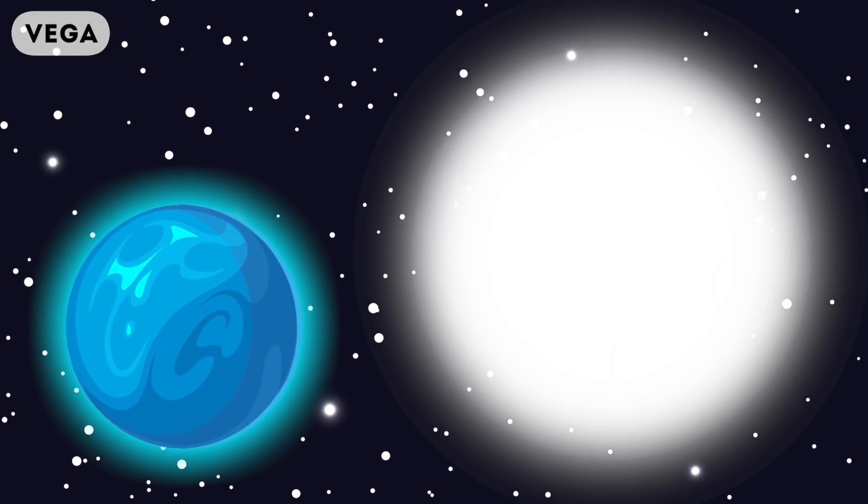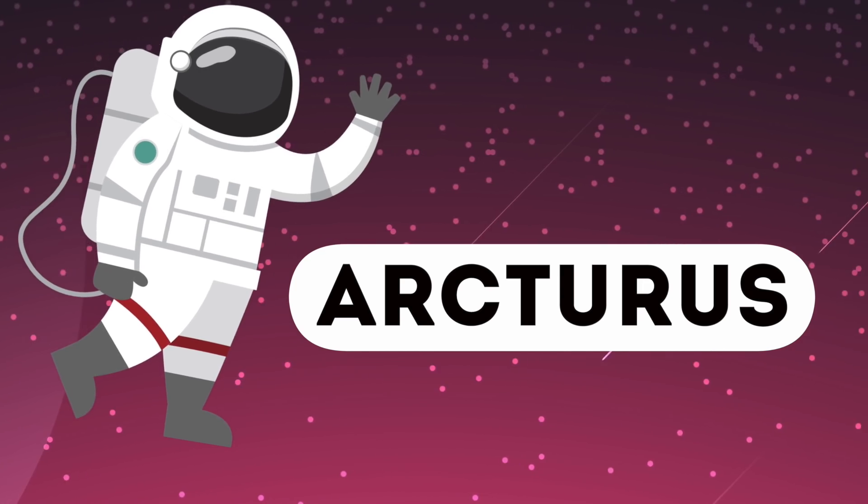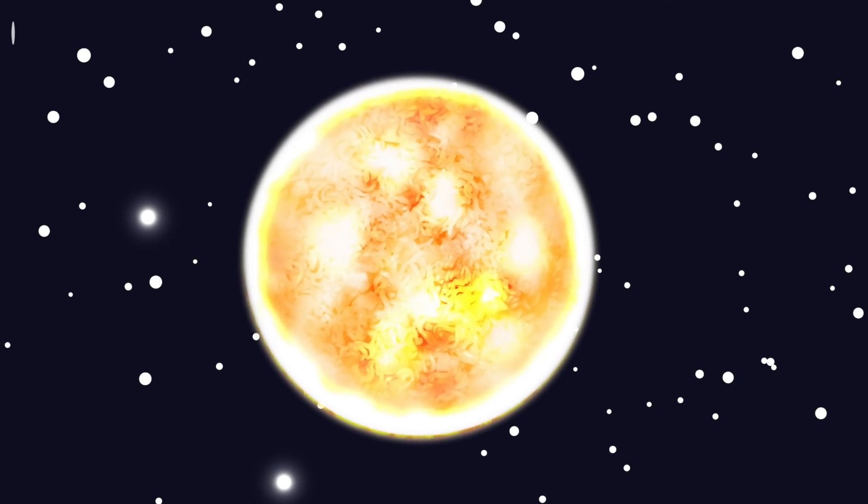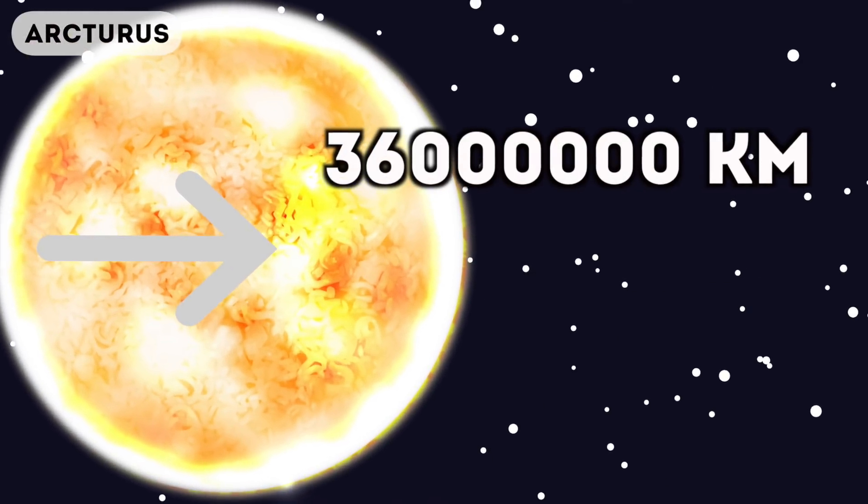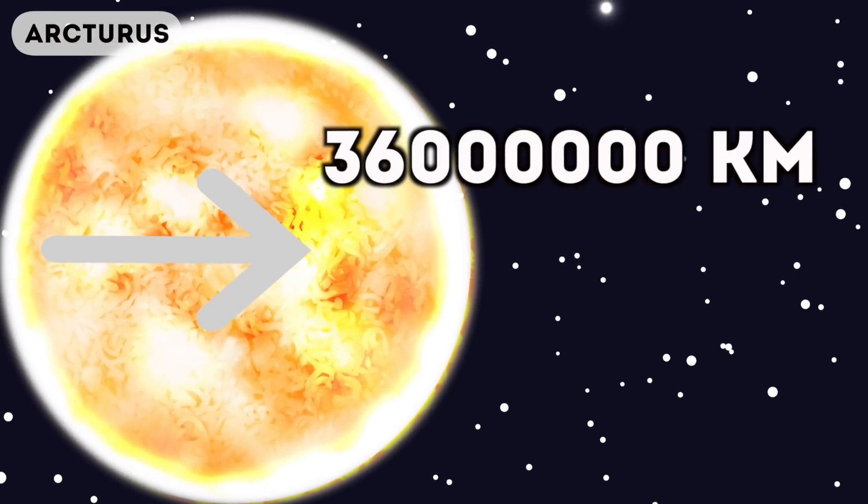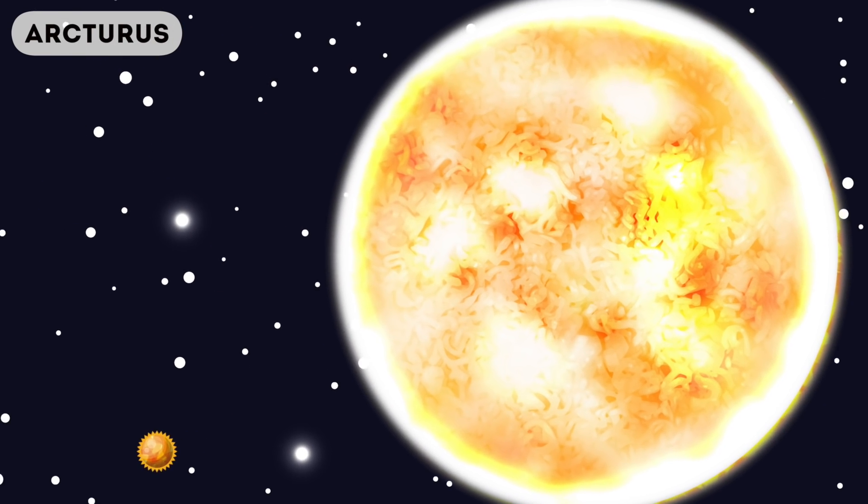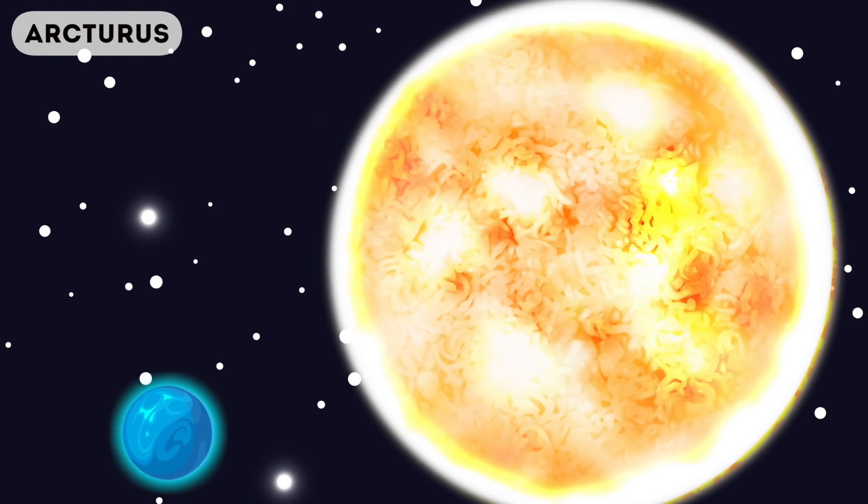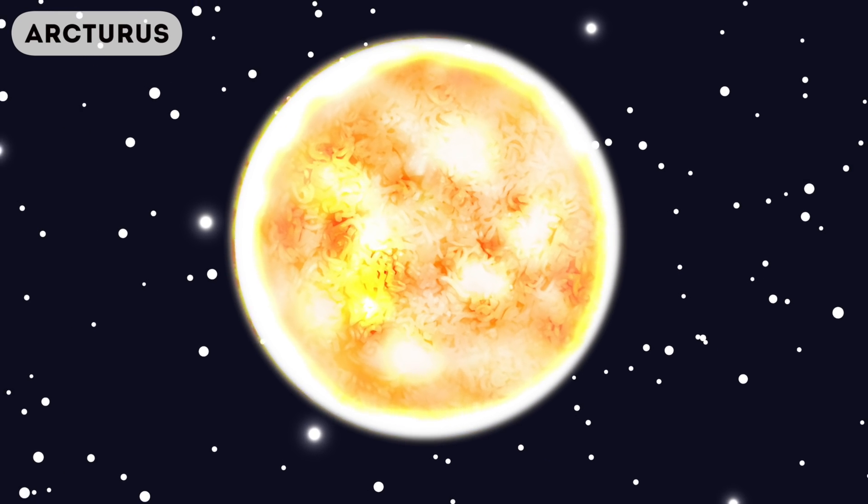Next, let's look at Arcturus. Okay, now things are really going to turn up a notch. Arcturus is 36 million kilometers in diameter. It kind of resembles one ginormous version of the Sun, but here's the Sun in comparison to Arcturus, and here's Arcturus in comparison to Vega. It's around 37 light years away from Earth and it's part of the Boötes constellation.